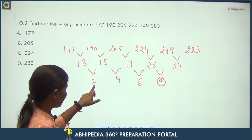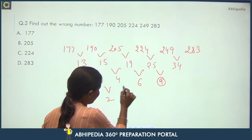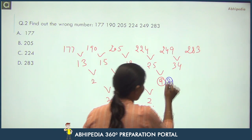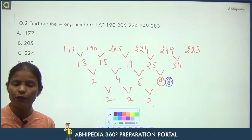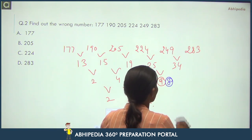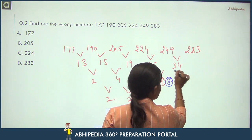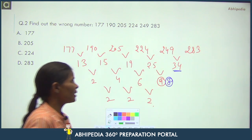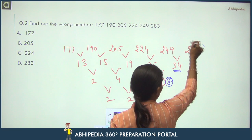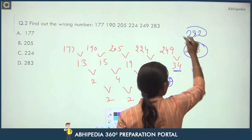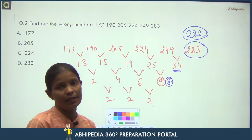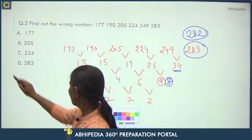The difference should be 8 (following the +2 pattern: 2, 4, 6, 8), but the difference here is 9. That means if there should be a difference of 8, then the value here should be 33 less — making the number 282. So 282 is the correct number and 283 is the wrong number. Your answer is 283.